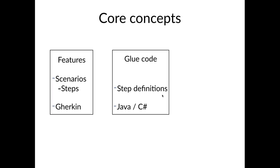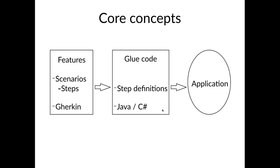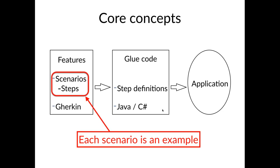The steps from the feature files connect directly to the step definitions in the glue code and cause automated activities to take place within your application. If you're using Cucumber for Java, the step definitions will be written in Java or another JVM language. If you're using .NET or Specflow, they'll be written in C#. There are many other versions of Cucumber available, and in all cases step definitions are written in the language of that implementation. Cucumber or Specflow parses the feature files, causes scenarios to be run, picks out each step, finds the matching step definition, and calls the associated code — which then calls your application. This is where the BDD process of collaboration and concrete examples feeds into test automation.